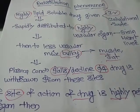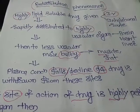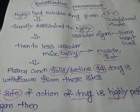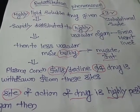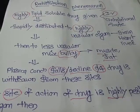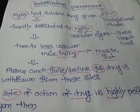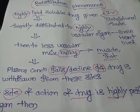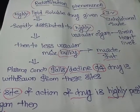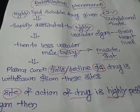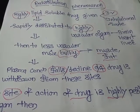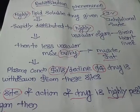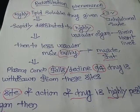First of all, it will get distributed to the highly vascular organs like brain, heart, liver, and kidney. Then it distributes to the less vascular and more bulky organs like skeletal muscles and adipose tissue or fat. Because of that redistribution to the less vascular organs like muscle and fat occurs.